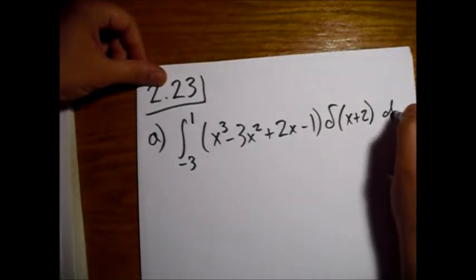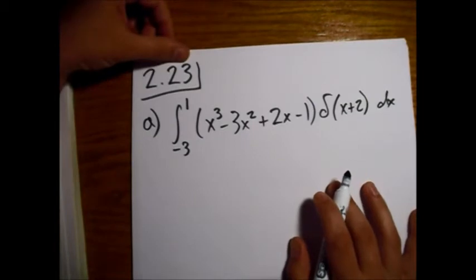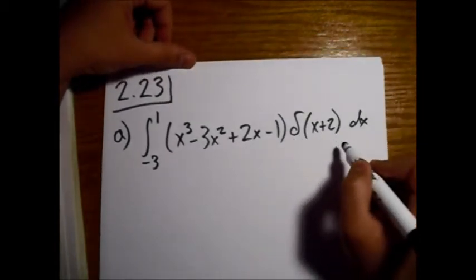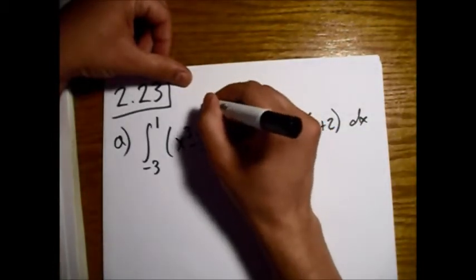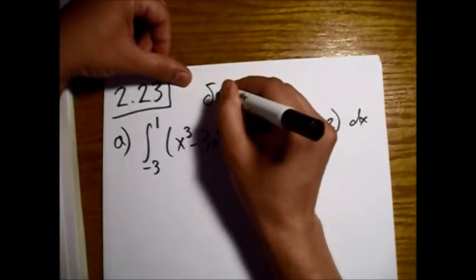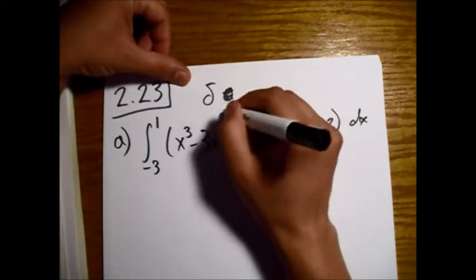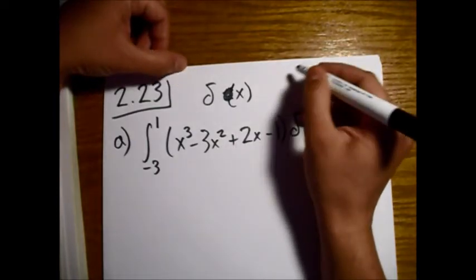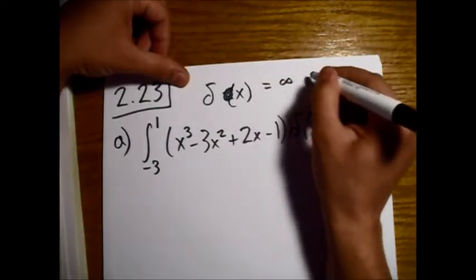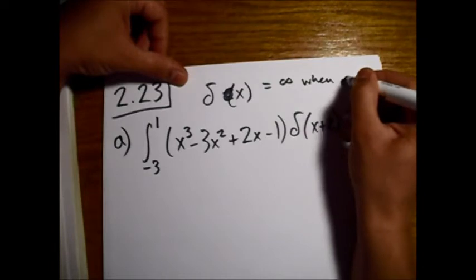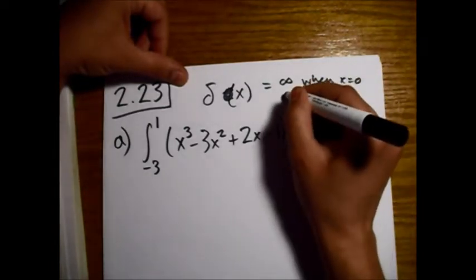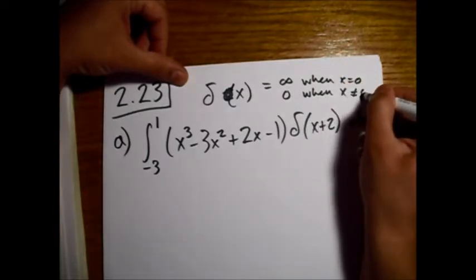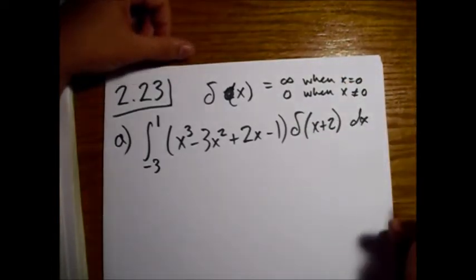Okay, so this Dirac delta function, if we have a Dirac delta function of x, it equals infinity when x equals 0, and it equals 0 when x is not equal to 0, right? And if you integrate over it, then you get 1.